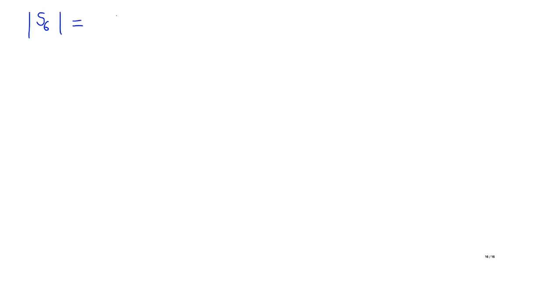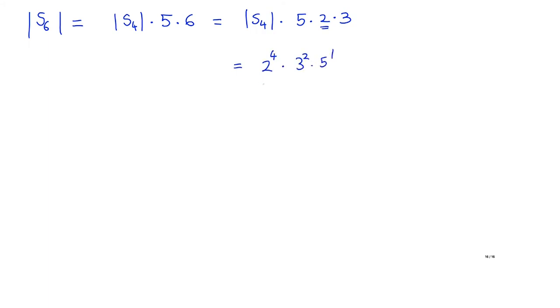Let us move on to S6. The cardinality of S6 is 6! = 4!×5×6 = 2³×3 times 5 times 2×3 = 2⁴×3²×5. Now the highest power of 2 has increased by 1, so I am looking for a subgroup K of S6 whose cardinality is 16.